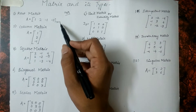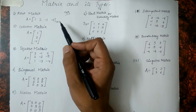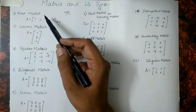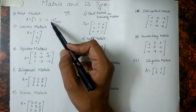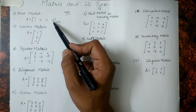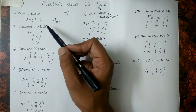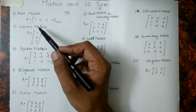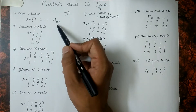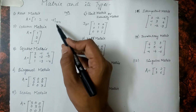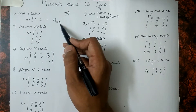Now let us go into the classification of matrix. The first matrix which we have is the row matrix. The row matrix is a matrix in which there is only a single row — not more than that. In this example, we have 4 elements in a row and the order of the matrix is 1 cross 4. We write number of rows cross number of columns.